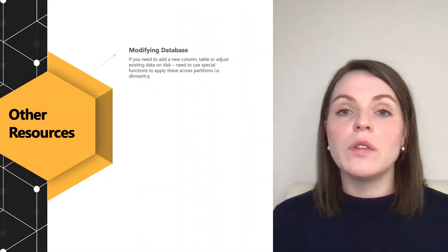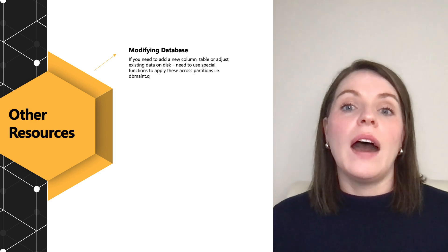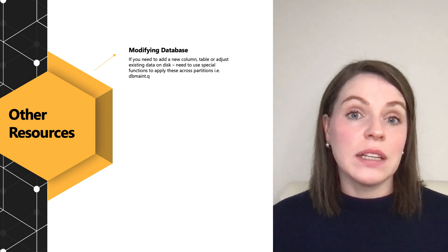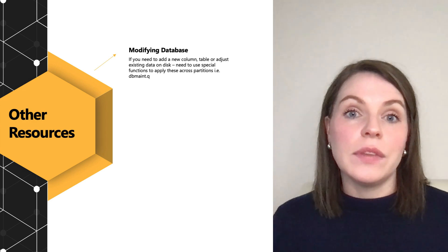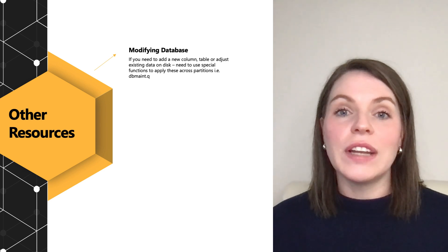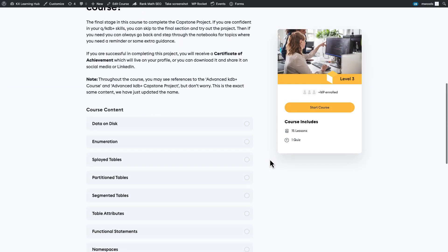A few things I deliberately didn't cover are because they're already in our developer level three academy course. The first one is modifying our database — if we needed to do that on a historical database, we would need some special functions, and this is covered in detail in the partition module on the academy.